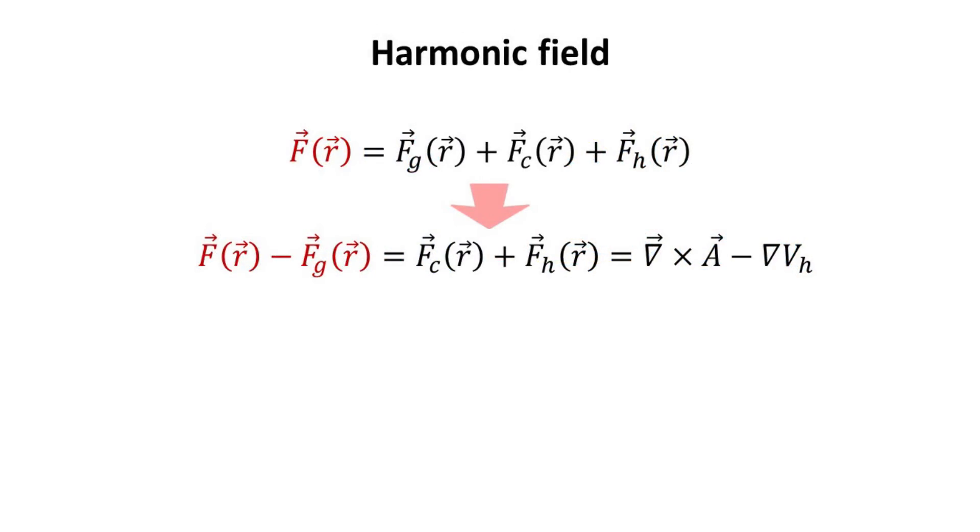Next up is the harmonic field F_H. Let's group the gradient field together with the vector field F. Thus, all terms on the left, highlighted in red, are known. We write again the remaining two fields in terms of their potentials.